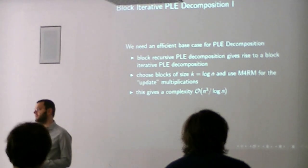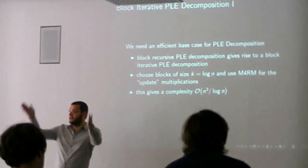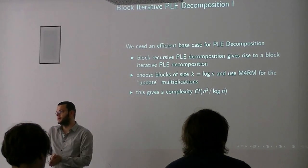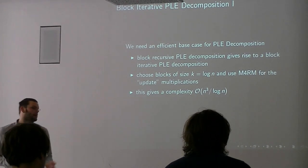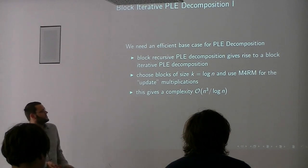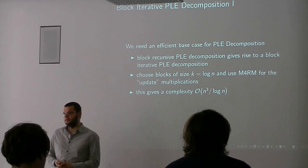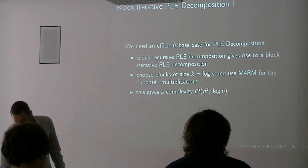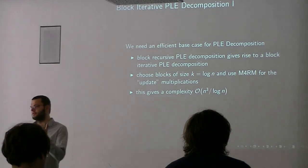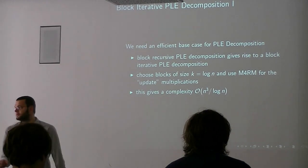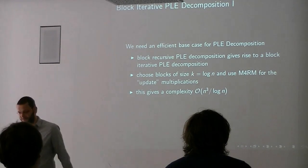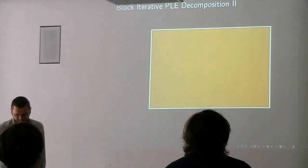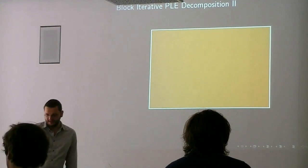So this is the asymptotically fast technique. Again, we would like - this is a bunch of recursive calls, so at some point we end up with a matrix that we don't want to do recursive calls on, so we do the base case. And again, we want to have that to be efficient. One way to think about the base case is to think about the previous algorithm, but instead of cutting in half, you're cutting into smaller blocks. So you're not doing a block recursive version, but a block iterative version. If you then use the M4RM algorithm for the update, then you will end up with something that has N cubed divided by log N complexity again.